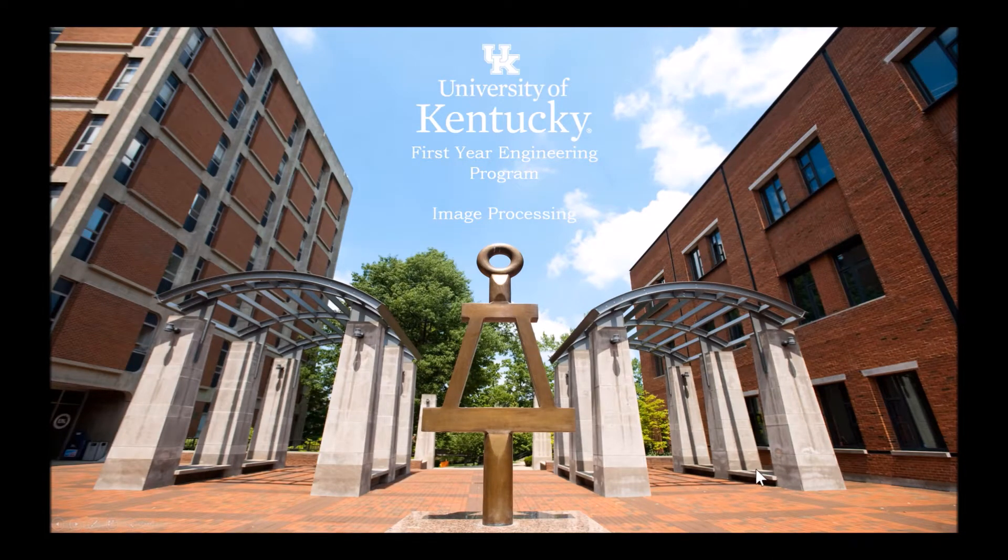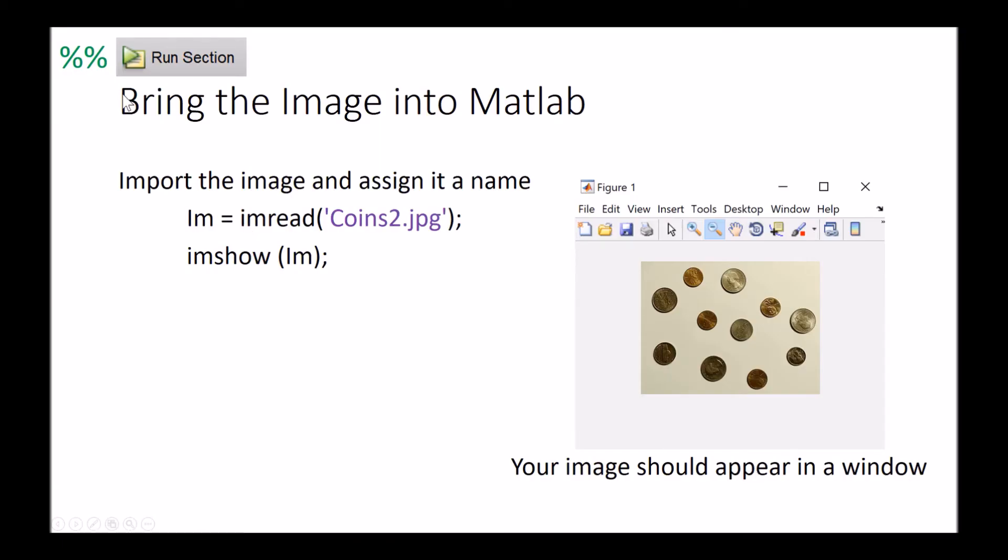We're going to look into image processing within MATLAB. I'm going to develop this code with sections, and whenever you see two percent signs it means that it's going to be a new section. What that allows me to do is to run the code by the section and then it's just going to allow me to debug it a little faster.